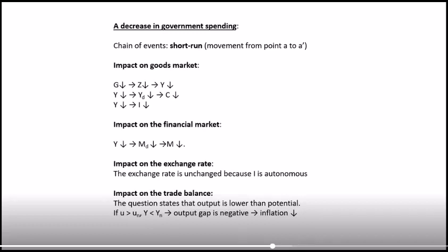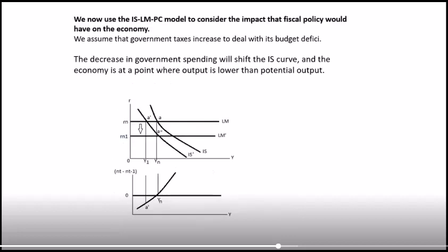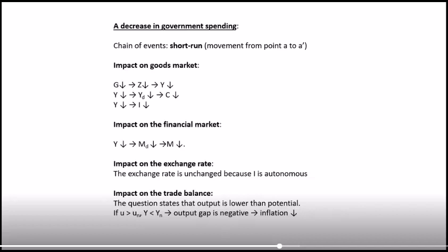The impact on financial markets: a decrease in income and output Y results in a decrease in the demand for money. The supply of money will also decrease. The exchange rate is unchanged because investment is autonomous. The output is to the left of YN — below potential — so unemployment is greater than the natural level of unemployment, and actual output is less than the natural level of output.